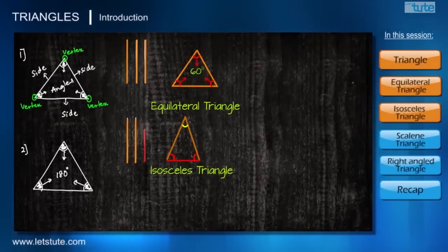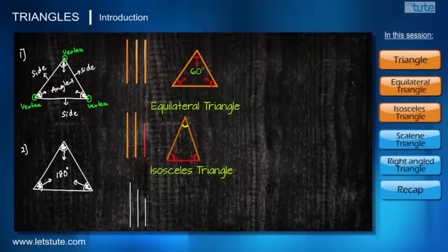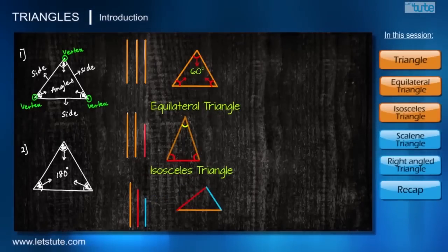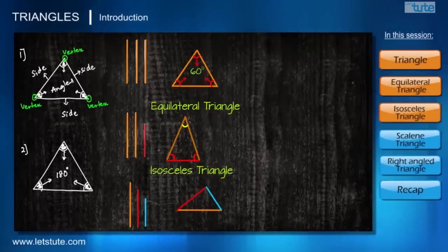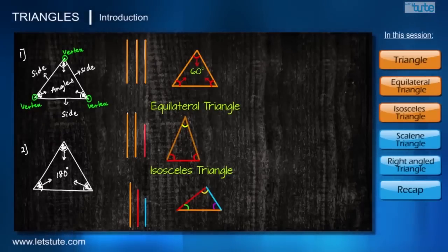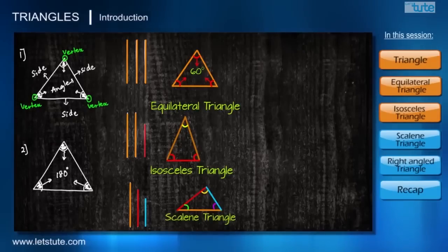Now let's take a case of three different, or unequal, sides and try to form a triangle. When three sides are not equal to each other, the three angles formed will also not be equal to each other — then only this triangle is possible. Such triangles are called scalene triangles. The meaning of the term 'scalene' itself is unequal.